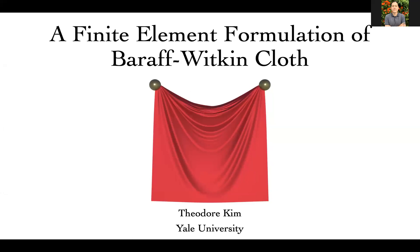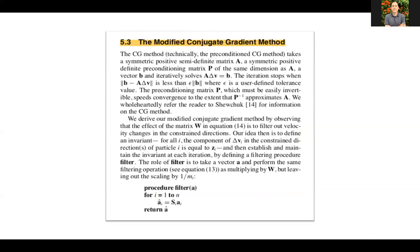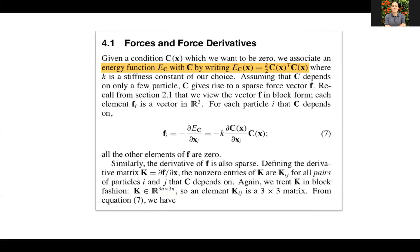Thanks for coming to my talk: 'A Finite Element Formulation of Baraff-Witkin Cloth.' This is one of the most-cited papers in all of computer graphics — over 2,200 citations on Google Scholar. The number one reason it's cited so much is that it captured a magic moment when implicit integration and preconditioned conjugate gradients hit a performance sweet spot, and this paper observed that.